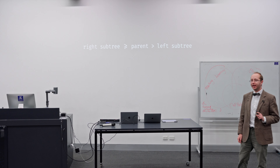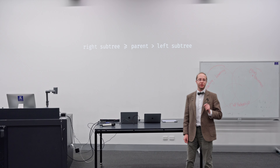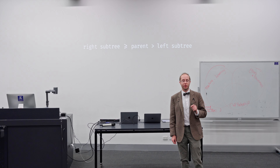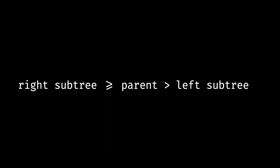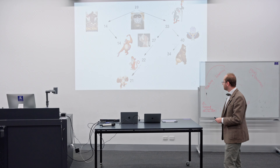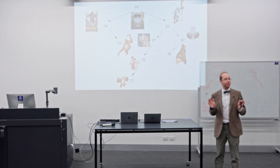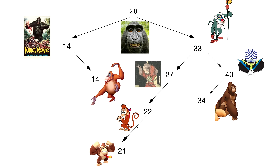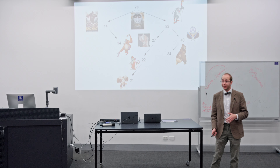Just to go over what we did yesterday: for binary search trees, the property that was necessary was that the right subtree always had to be greater than or equal to any given node, which had to be greater than everything in the left subtree. This was our binary search tree representing the different ages of all the apes. On the left-hand side, everything is smaller than the root — the number 20 — and everything on the right-hand side is larger. The same holds for any given node.